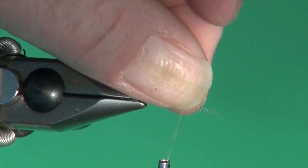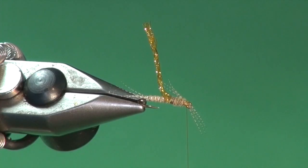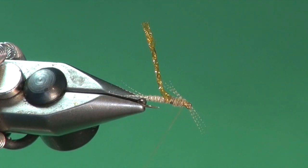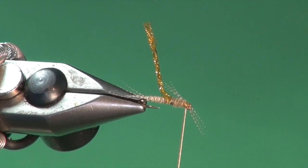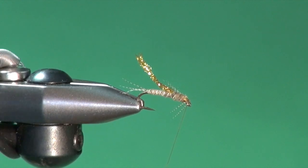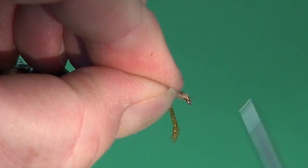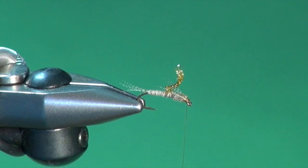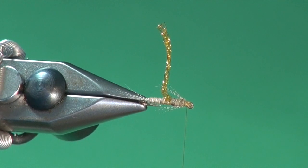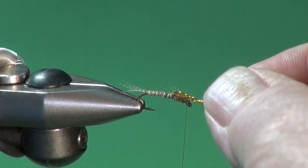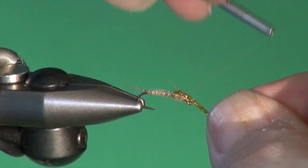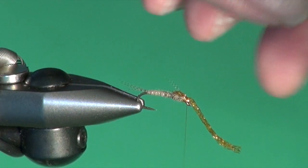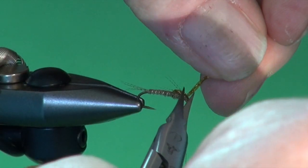For the front section I've got my thread hanging right up at the hook eye. There's divided. Now we're just going to take these, hold them in place, wrap right back. I've got them divided there. The wing case is going to help divide these even more. Now we're going to pull our wing case over, tie it down, trim it flush, as flush as you can.